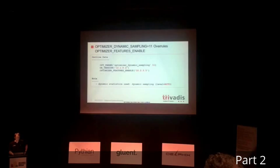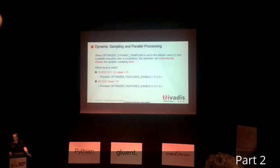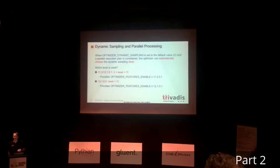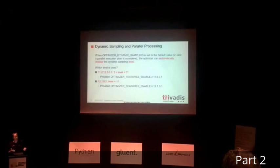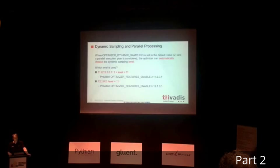Let's look at when adaptive dynamic sampling is automatically used by Oracle. The first case is when you are using parallel processing. This already happened in 11.2: when the optimizer tries to generate a plan containing a parallel operation, it can automatically activate sampling or increase the level of sampling. If you have set sampling to the default value of 2, in 11.2 the optimizer might decide: this is a query supposed to process a lot of data, so let's increase optimizer dynamic sampling to 5, 6, or whatever, to get more insight about the data and maybe generate a better plan.